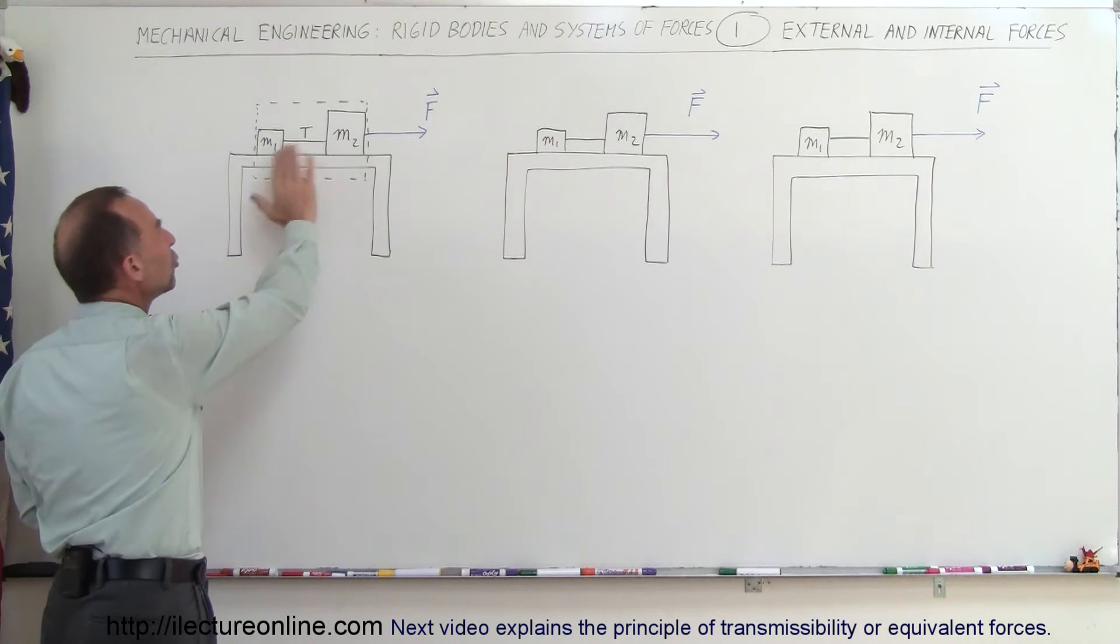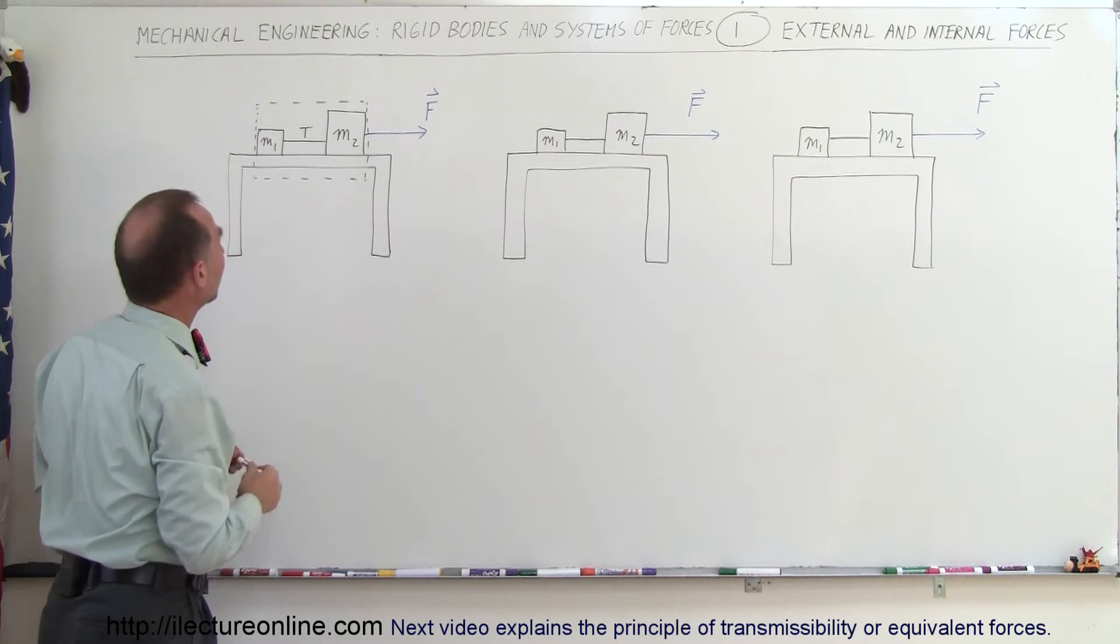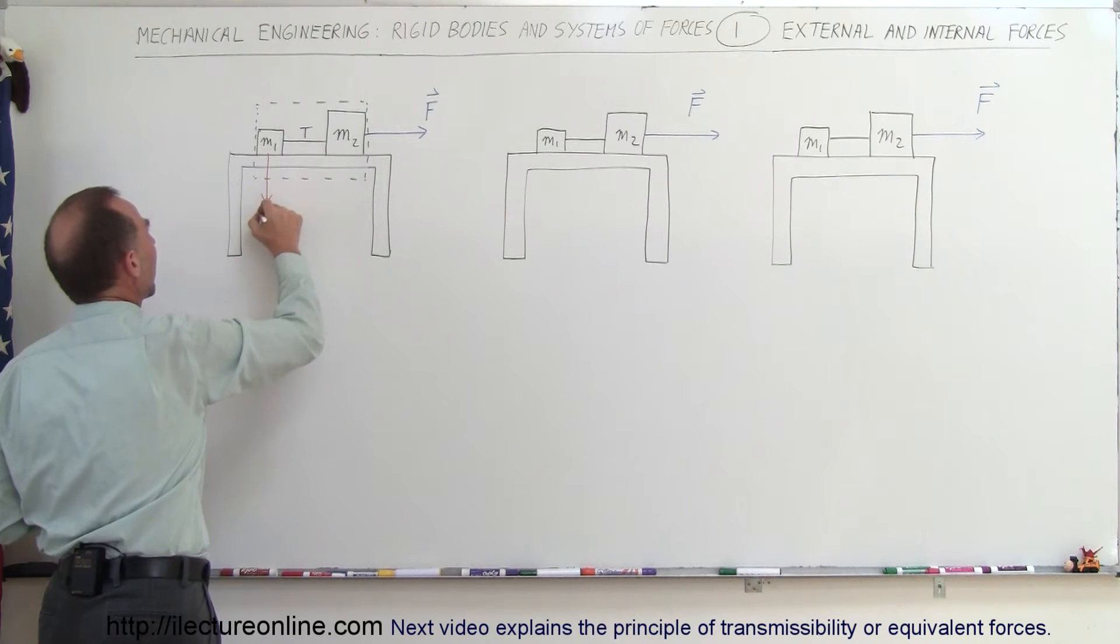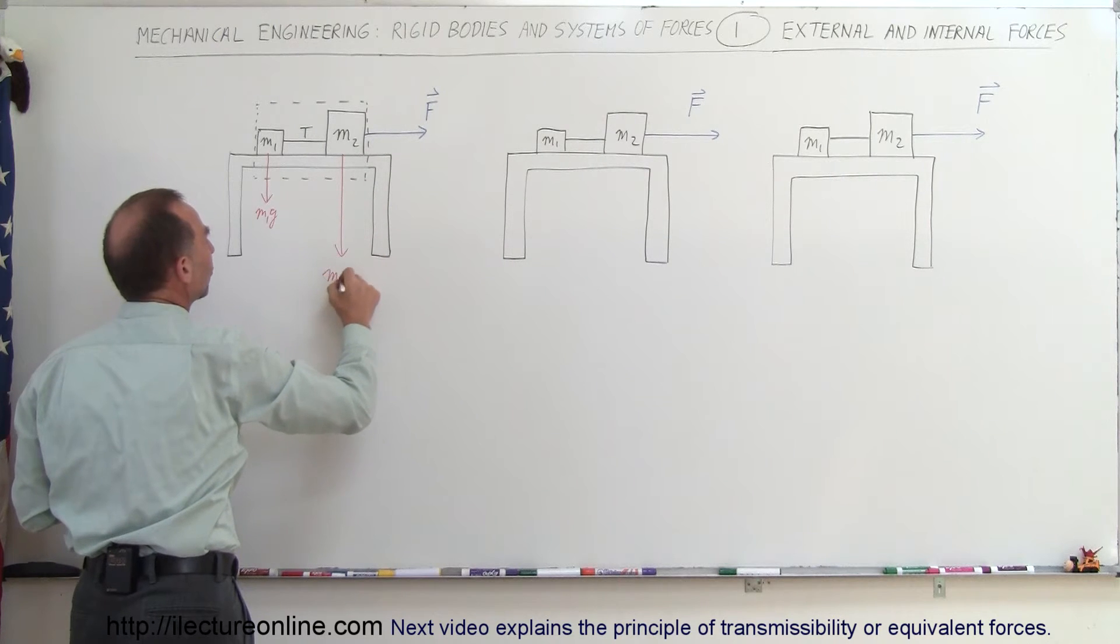So we can ignore that when we talk about the forces external to the whole system. So let's draw the rest of the forces. We also have the force of gravity acting on M1 which would be M1G. We have the force of gravity acting on M2 which is M2G and of course these are forces so we can go ahead and put a vector on that.